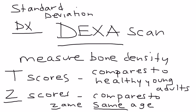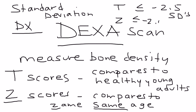Osteoporosis is defined as a T-score less than or equal to minus 2.5 standard deviations, and a Z-score less than or equal to minus 2.0 standard deviations. When you do this test and the results come back, if the T-score is less than minus 2.5 or the Z-score is less than minus 2.0, the patient has osteoporosis.